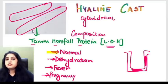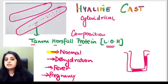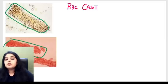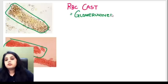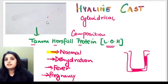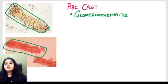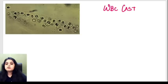My concern begins when something sticks on top of that transparent cylinder and comes along with it. For example, if red blood cells are stuck on top of the Tamm-Horsfall protein cylinder, I now see an RBC cast, which is seen in a case of glomerulonephritis. A transparent cylinder alone is fine, but an RBC cast is definitely a matter of concern.